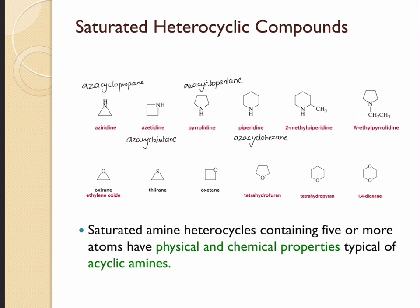Here it would be aza cyclohexane. On this compound we have a methyl group on the side chain, so the nitrogen should be assigned as number one, and you have to reach the substituent on the side chain with the shortest distance — that would be two — therefore this should be called 2-methyl aza cyclohexane.